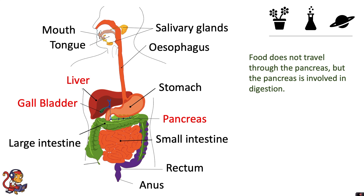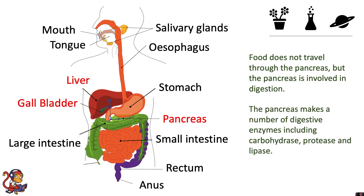Food does not travel through the pancreas but the pancreas is involved in digestion. The pancreas makes a number of digestive enzymes including carbohydrases, protease and lipase.